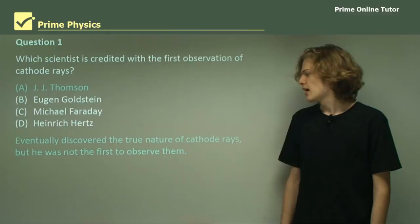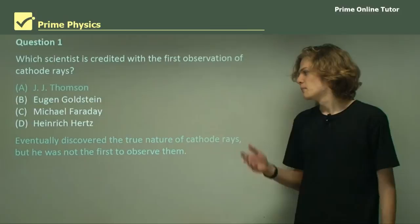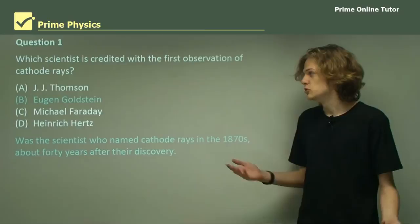Now we've heard of J.J. Thomson before in one of the previous presentations. And he in fact discovered the true nature of cathode rays and what they were made of, electrons. But he wasn't the first to observe them. He was in fact born after their first observation.